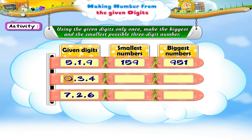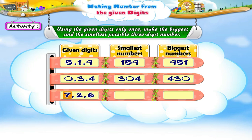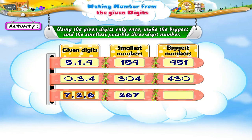Using zero, three, four — the smallest number made is three hundred and four, and the biggest number is four hundred and thirty. Using seven, two, six — the smallest number made is two hundred and sixty-seven, and the biggest number is seven hundred and sixty-two.